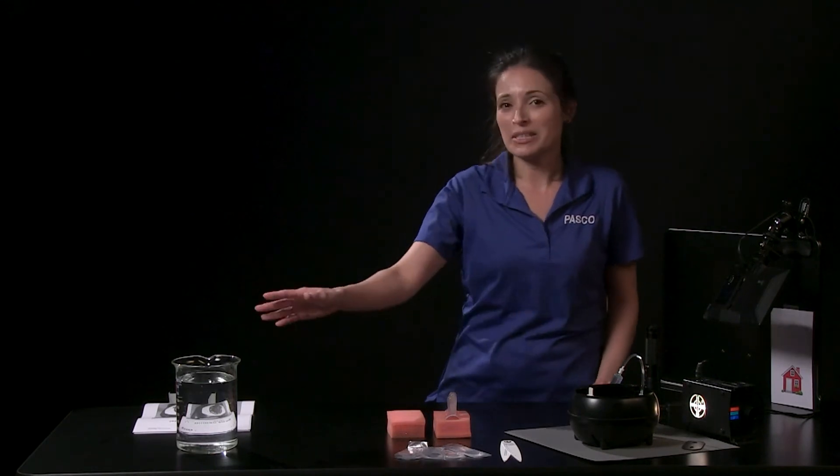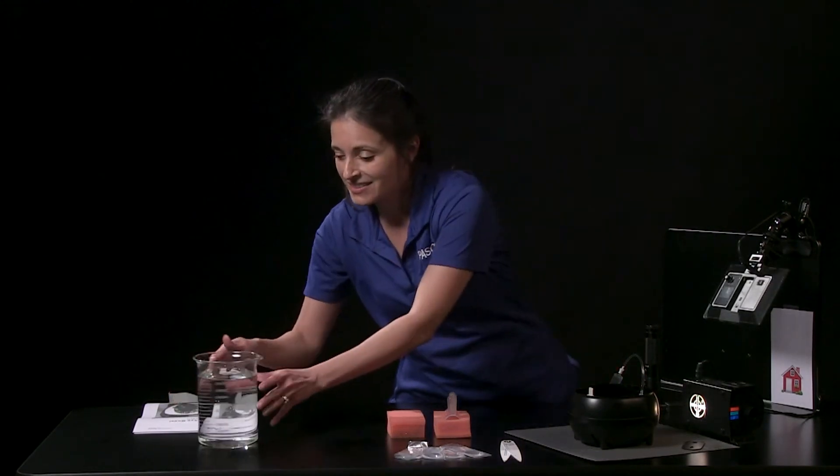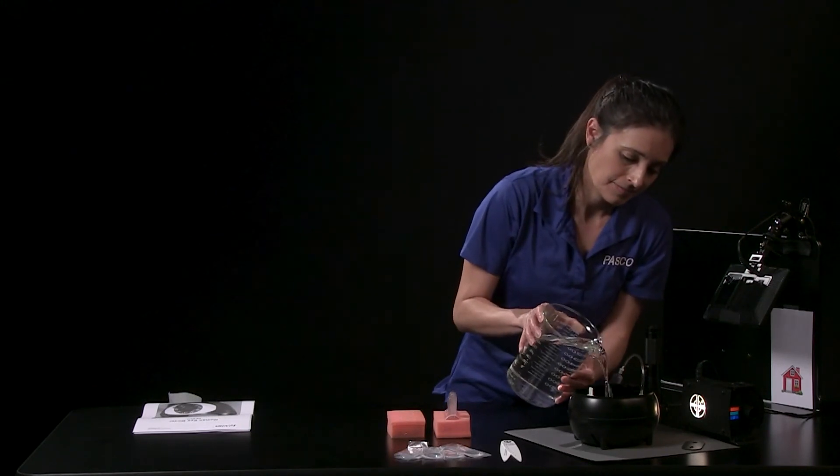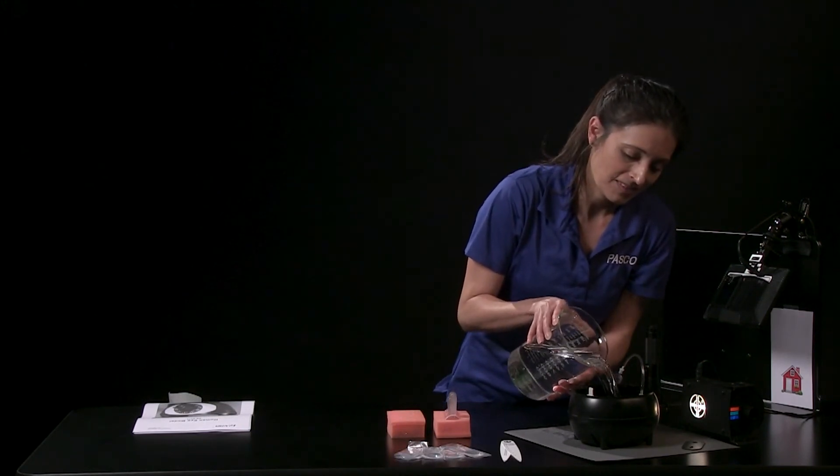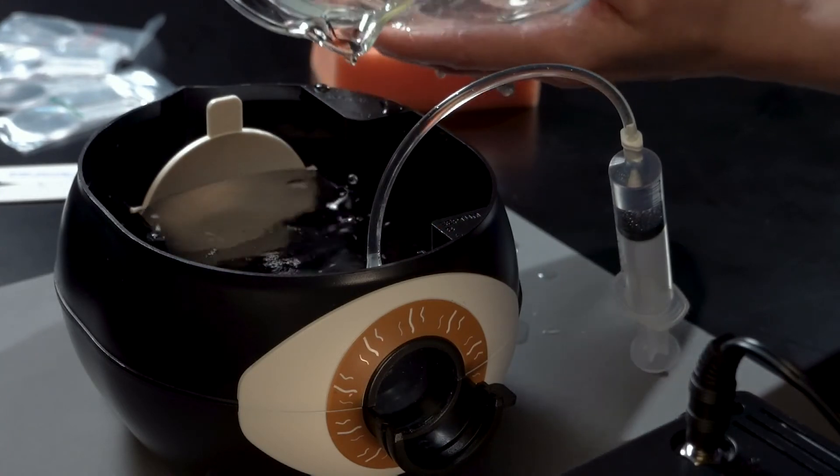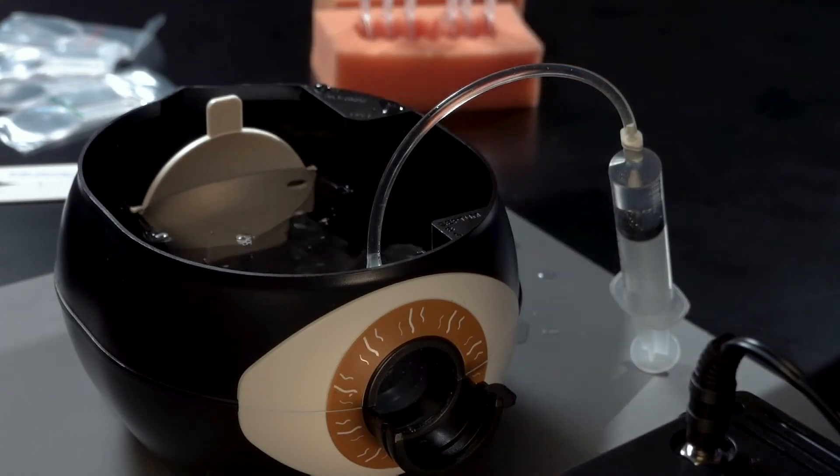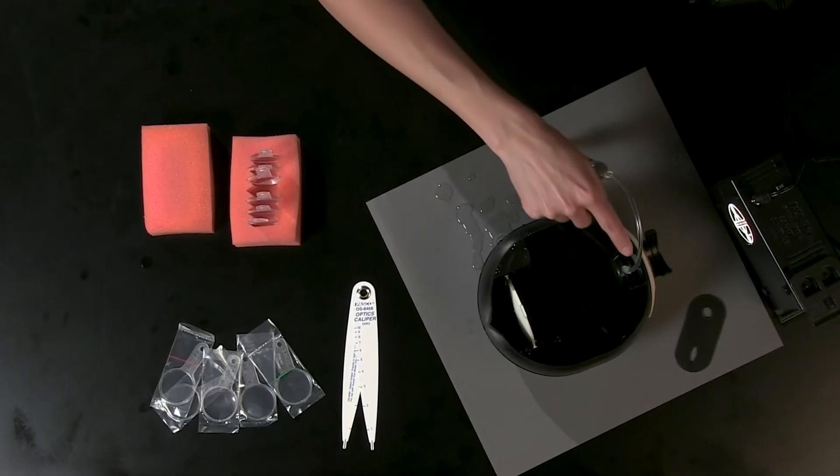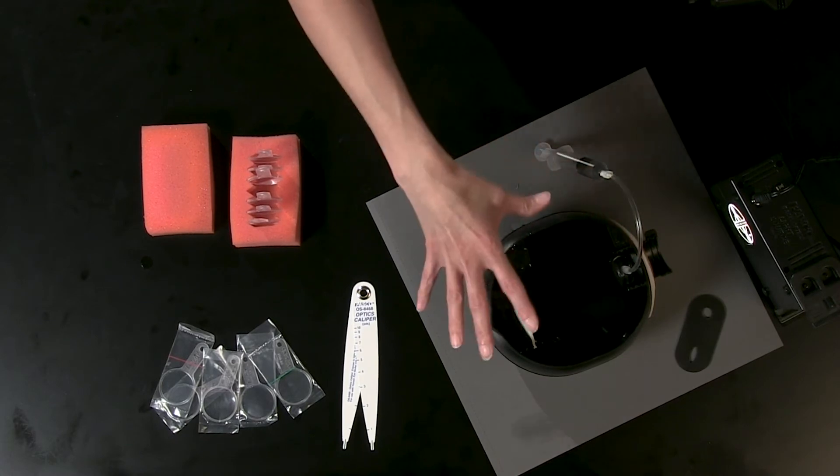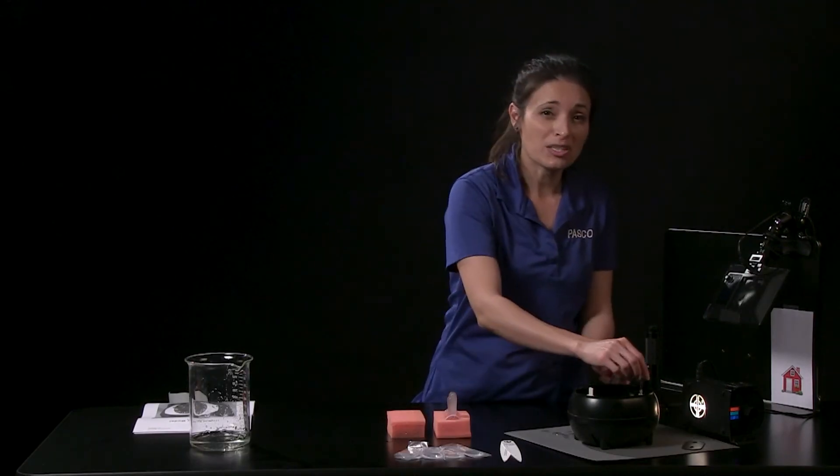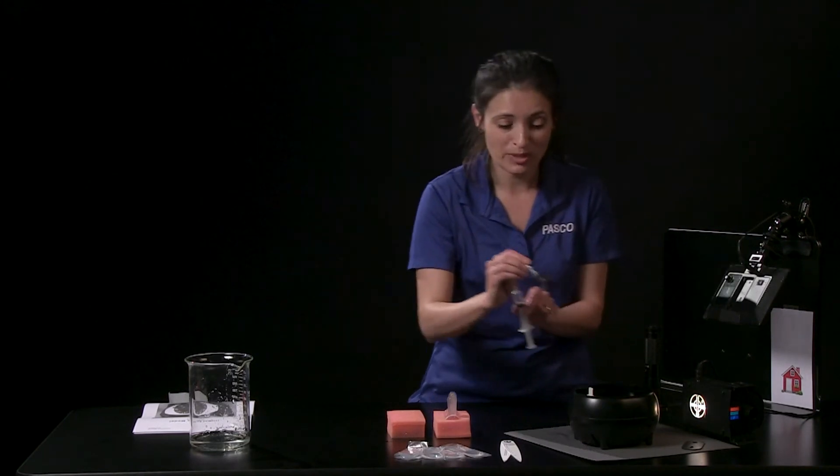Now I'm going to pour about one liter of water into the eye. The fluid right behind the cornea represents the aqueous humor, and the larger quantity of water represents the vitreous humor. I'll remove the adjustable lens and replace it with a 62mm lens.